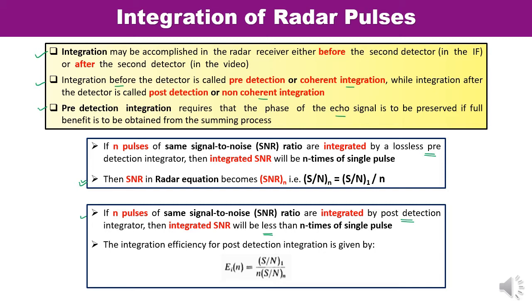The reason it is less is that integration is performed after the second detector, and this loss is due to the non-linear action of the second detector. The non-linear action converts part of the signal energy into noise energy during the rectification process. For post-detection integration, the integration efficiency — denoted EI — is written as the single-pulse SNR divided by N times the Nth-pulse SNR.